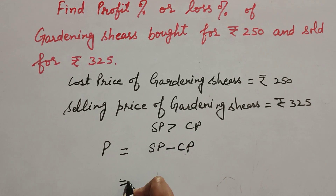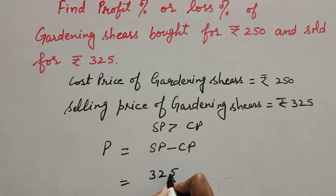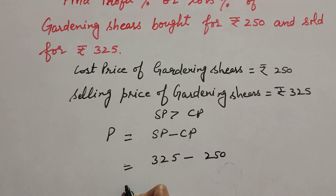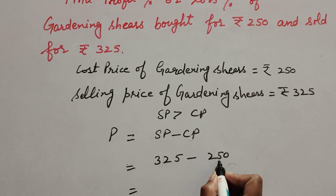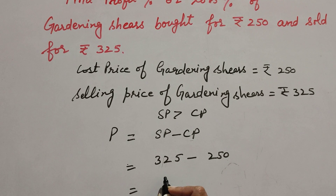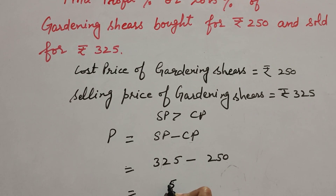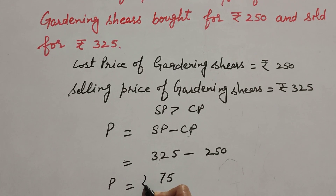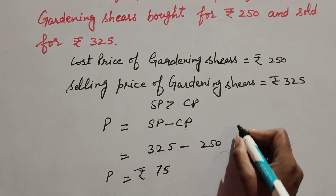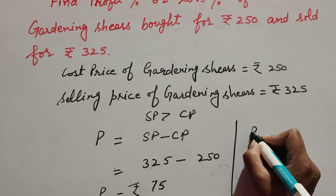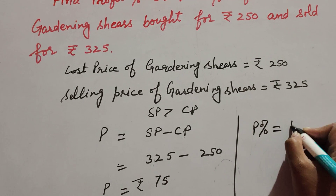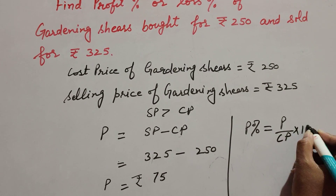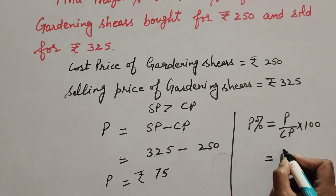Selling price is 325 minus cost price 250, so 325 minus 250 gives us 75. We get profit of rupees 75. Now we find profit percentage, which is equal to profit over cost price multiplied by 100. Profit that we found is 75.